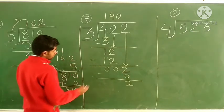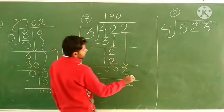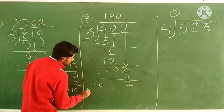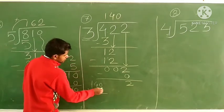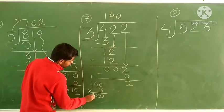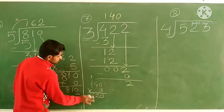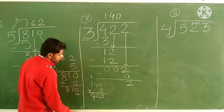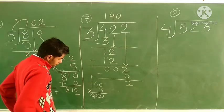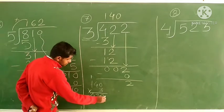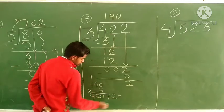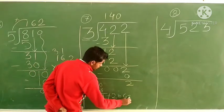Now check the answer. Quotient is 140, divisor is 3. Multiply 140 by 3: 3 zeros are 0; 3 fours are 12, write 2 carry 1; 3 ones are 3 plus 1 is 4. So 140 × 3 = 420. Now add the remainder 2: 420 + 2 = 422. That is our dividend, so the answer is correct.